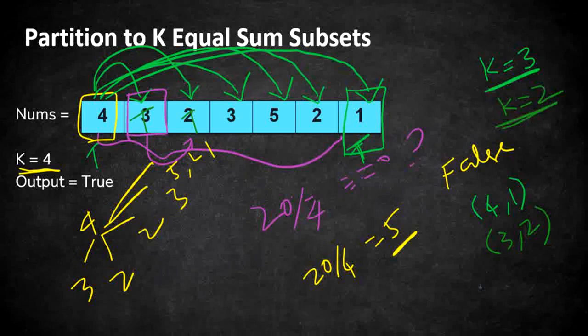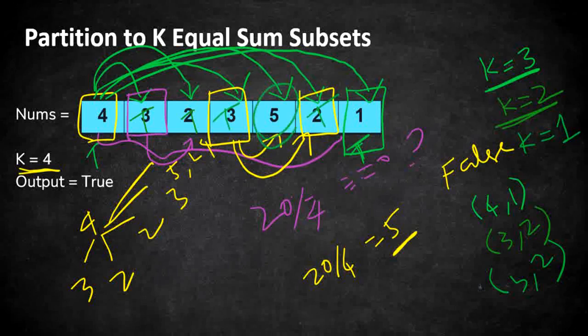There comes our next element which is 3 adding 3 plus 5 will not give you 5. So 3 plus 2 is 5. So we found our next subset which is 3 comma 2 and we have one more subset to find now and we set this to true. So if you check we have only one more element left of sum 5. That is going to be our next subset and we found our subsets 4 subsets and we divided the array into 4. We don't have any more elements left because all the cells are updated to true. So we are going to return true as our output.